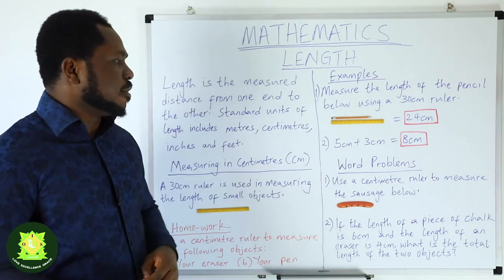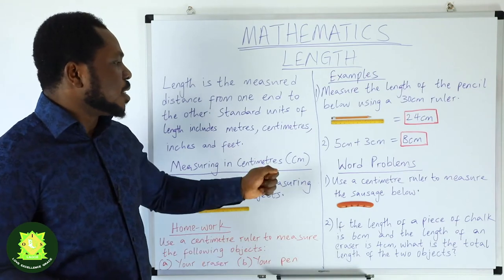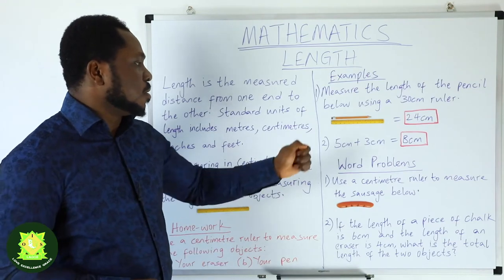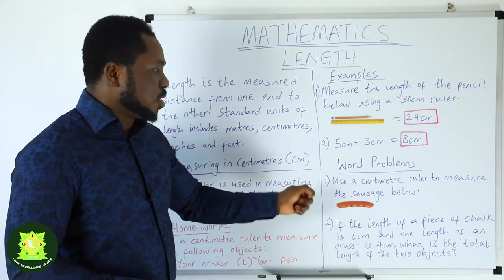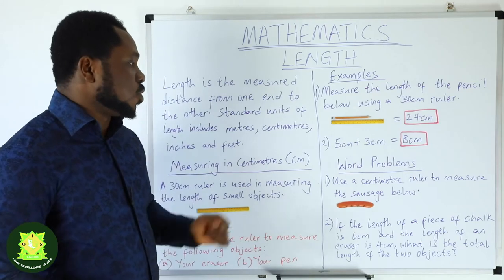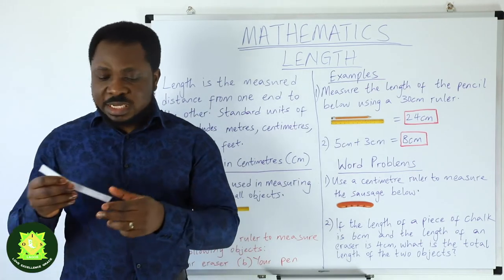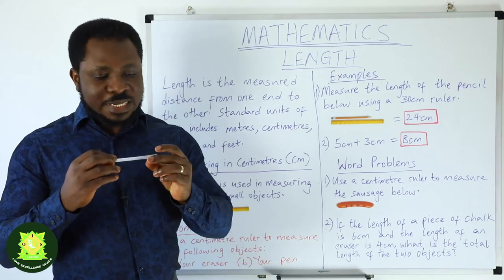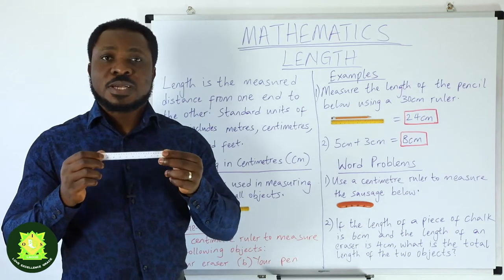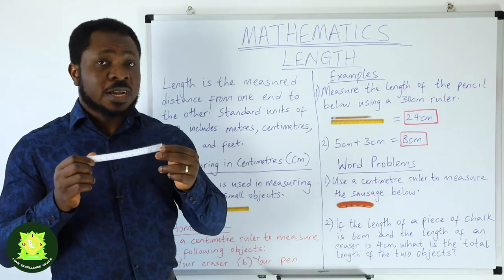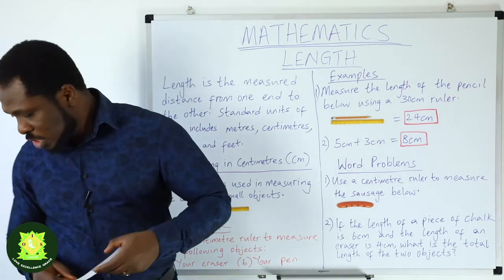So let us look at the following word problems. Number one: use a centimeter ruler to measure the sausage below. We are going to get our 30 centimeter ruler and use it to measure the sausage.